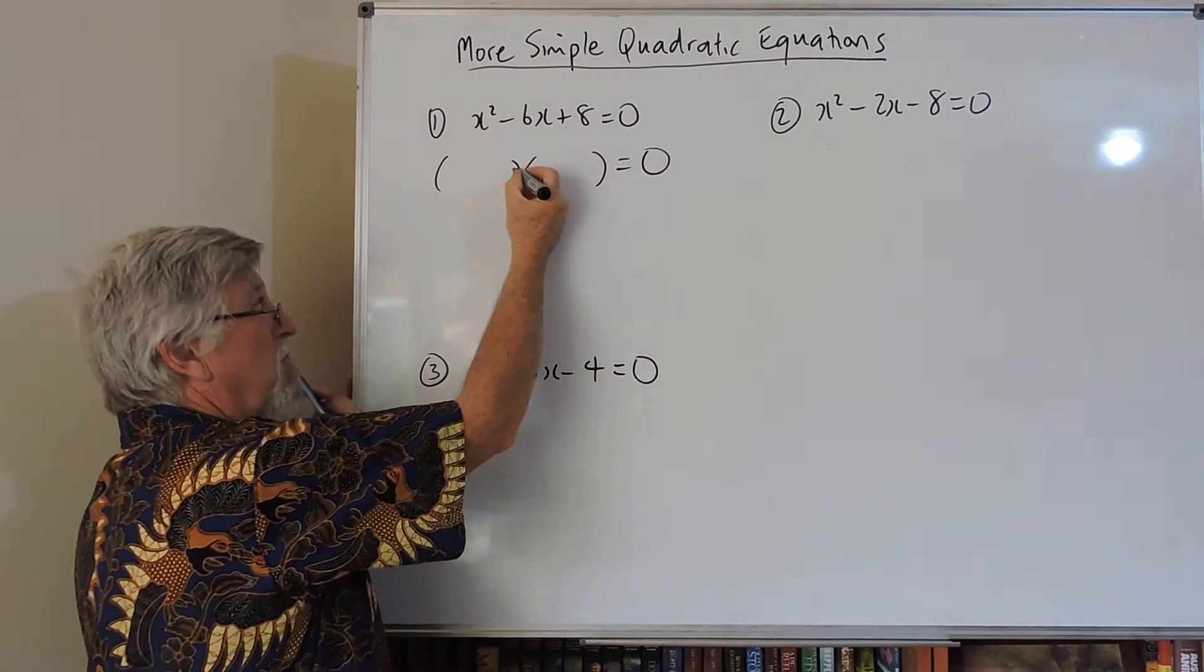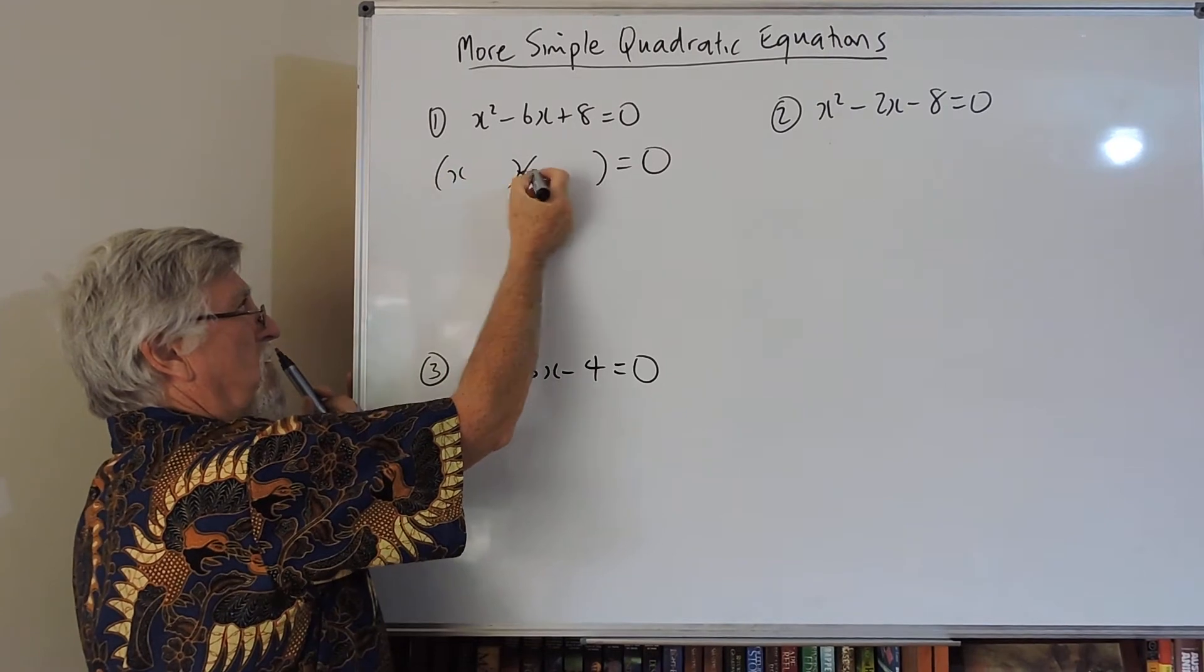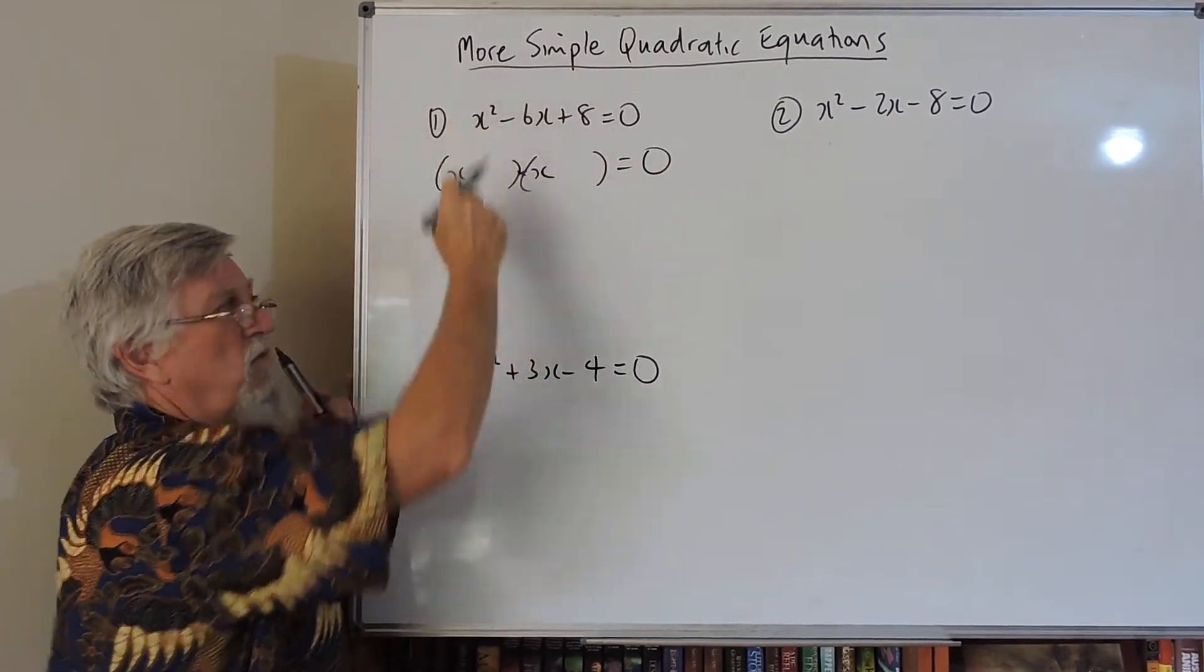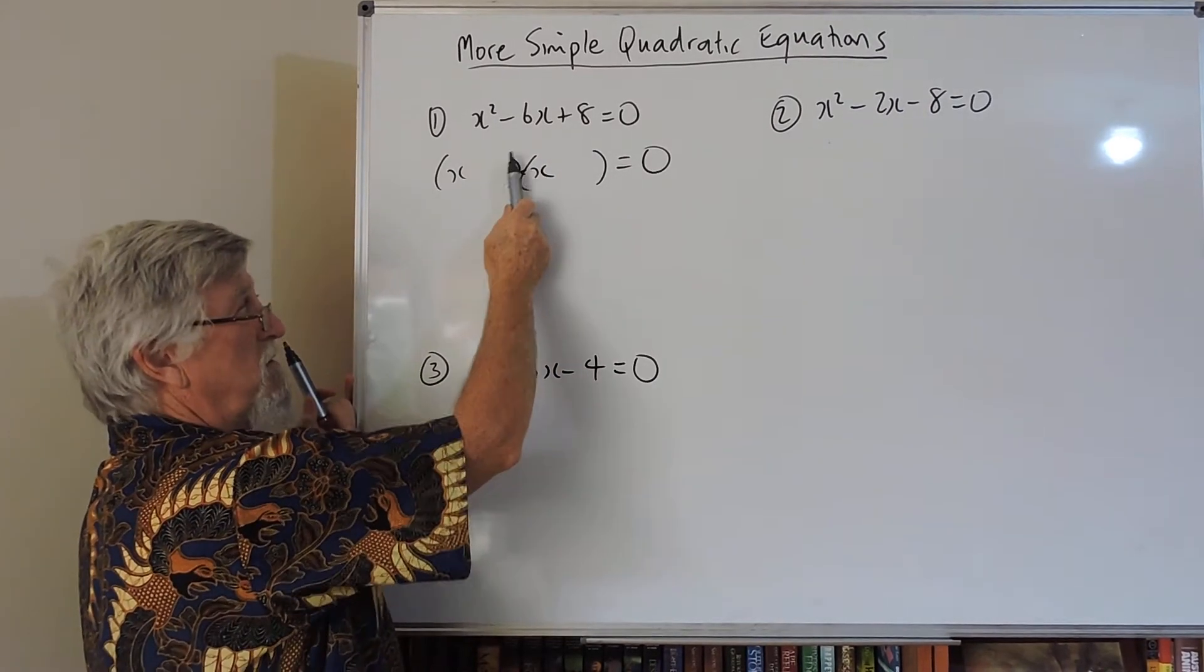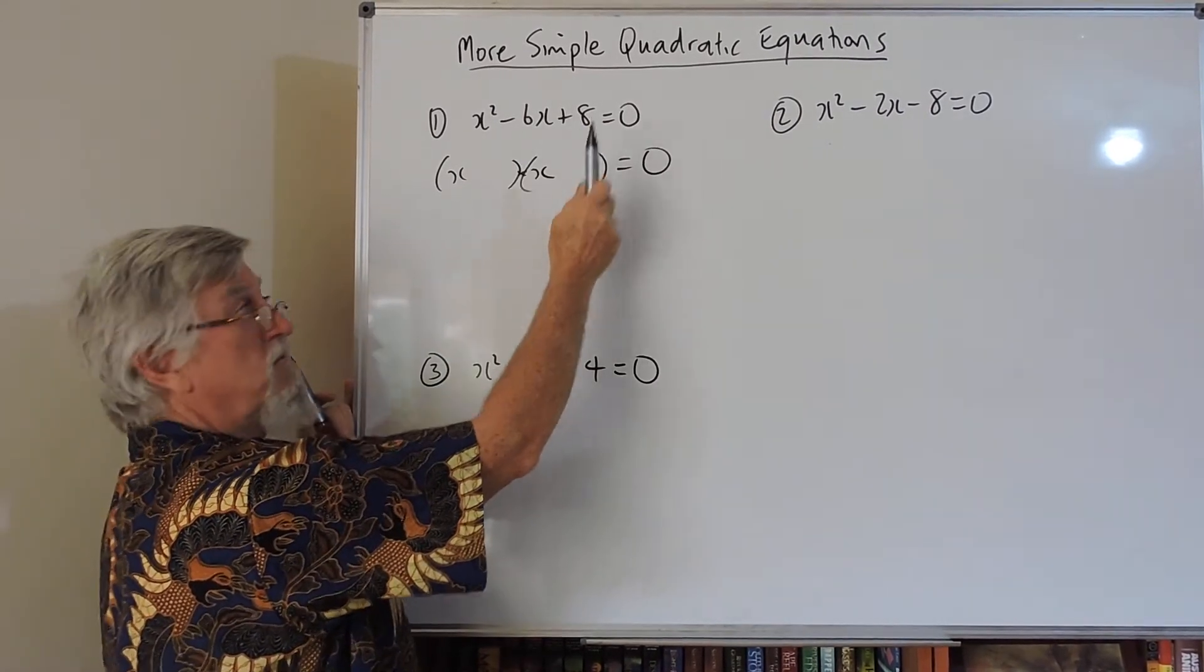How can I get an x squared when I'm multiplying? An x times an x. If I expanded the brackets will give me an x squared. So how can I get an 8? Whatever this number is, multiplied by whatever that number is, will give me that 8.